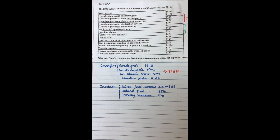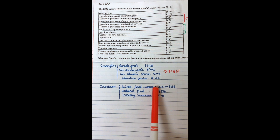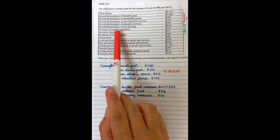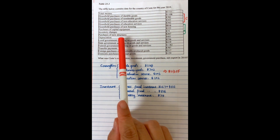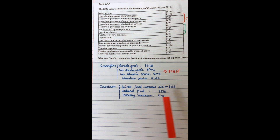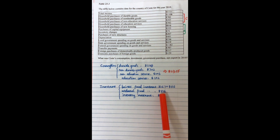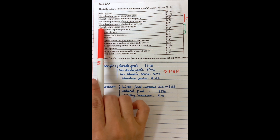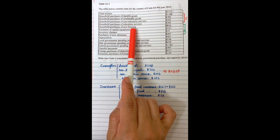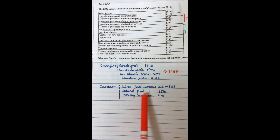Then let's look at investment. As we talked about before, investment includes three components: business fixed investment, residential fixed investment, and inventory investment. For business fixed investment, in this question, it includes two components — the purchase of capital equipment and the purchase of new structure. For residential fixed investment, from this table, there is a household's purchase of new housing, which counts as residential fixed investment.